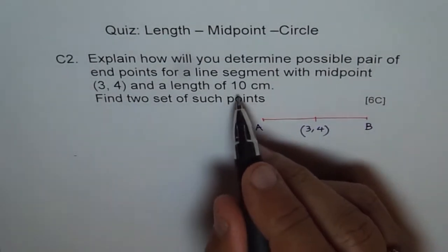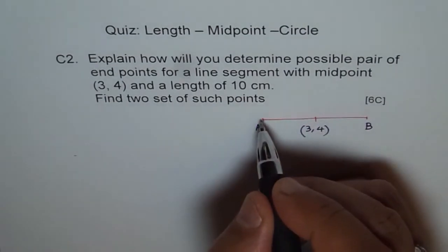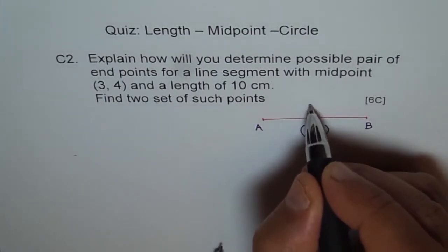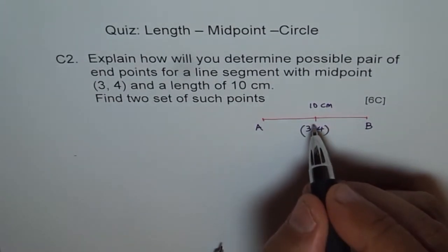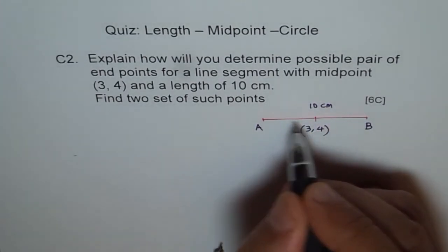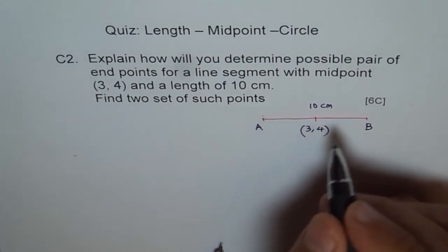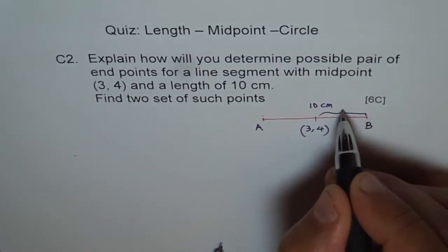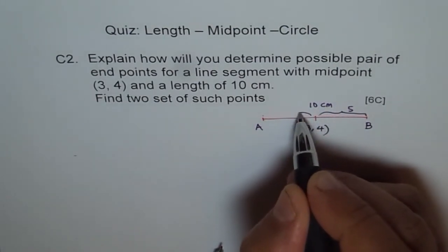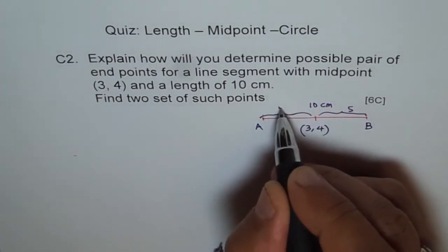And total length is 10 cm. So from A to B, we have 10 cm. And this is the midpoint that means 5 here, right? 5 here and 5 here. So we can write like this. This is 5 away. And let us say this is also 5 away.